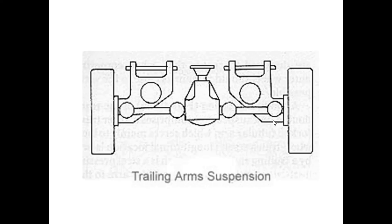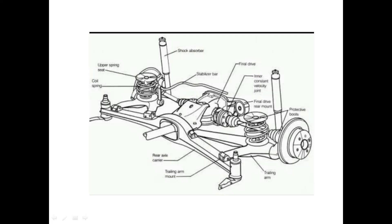Now we have a wishbone suspension system. We have a parallel trailing arm — two arms connected to the wheel, so this axis is parallel. This is the parallel trailing arm suspension system. If you have a trailing arm, you can see the other side and the front. This is the rear wheel drive suspension system. We don't have any vertical or perpendicular moments or positions, and no concerns about tire wear or life.